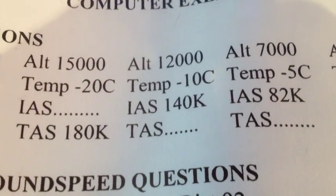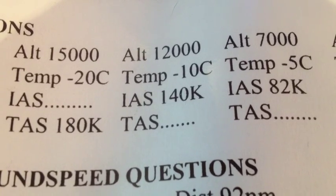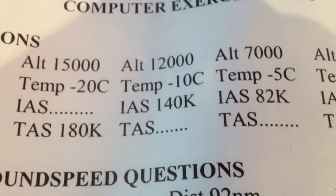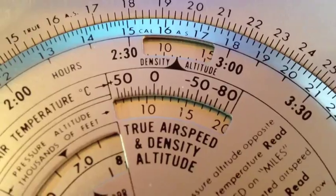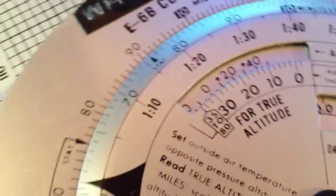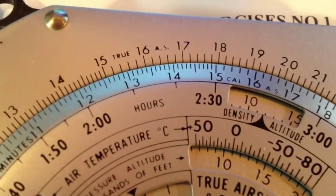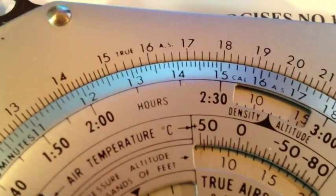Question number four. We're back to our normal calculation. We have a pressure altitude of 12,000 feet, a temperature of minus 10 Celsius, and an indicated airspeed of 140 knots — what will be our true airspeed? Taking a look at our E6B flight computer with those parameters set, we look at 140 knots on the inside scale, represented by 14, and looking at our outside scale, we get 167 to 168 knots true.